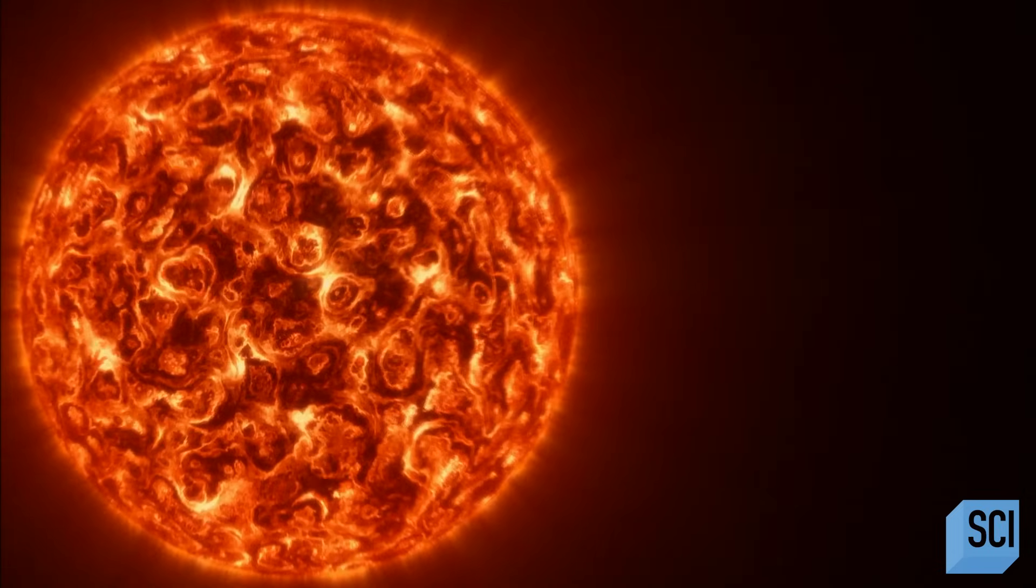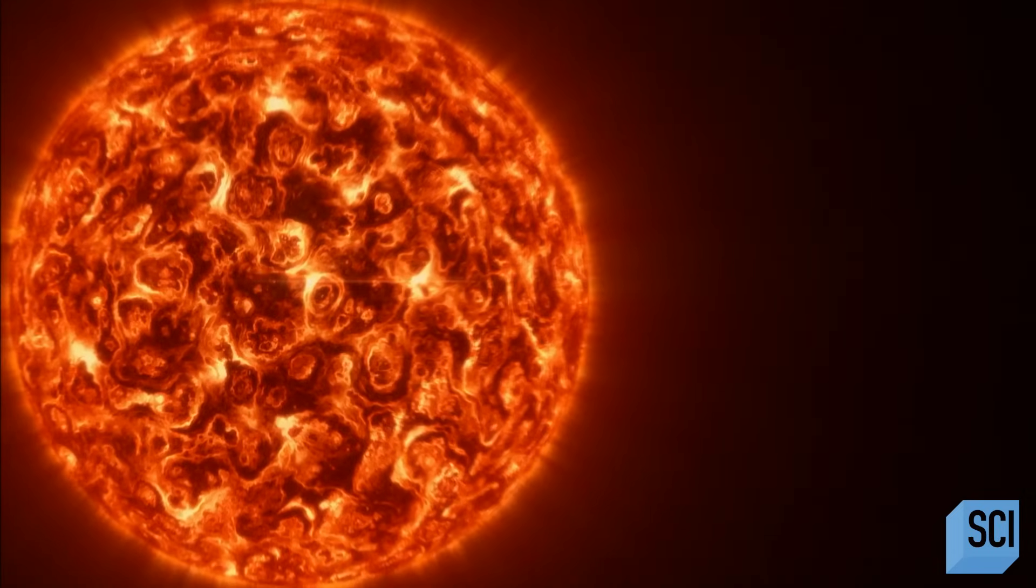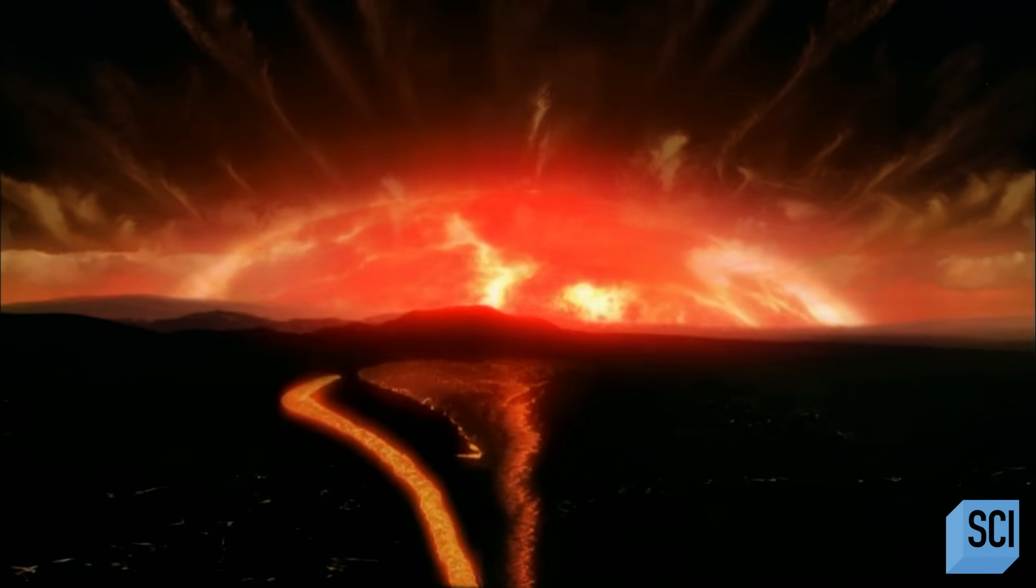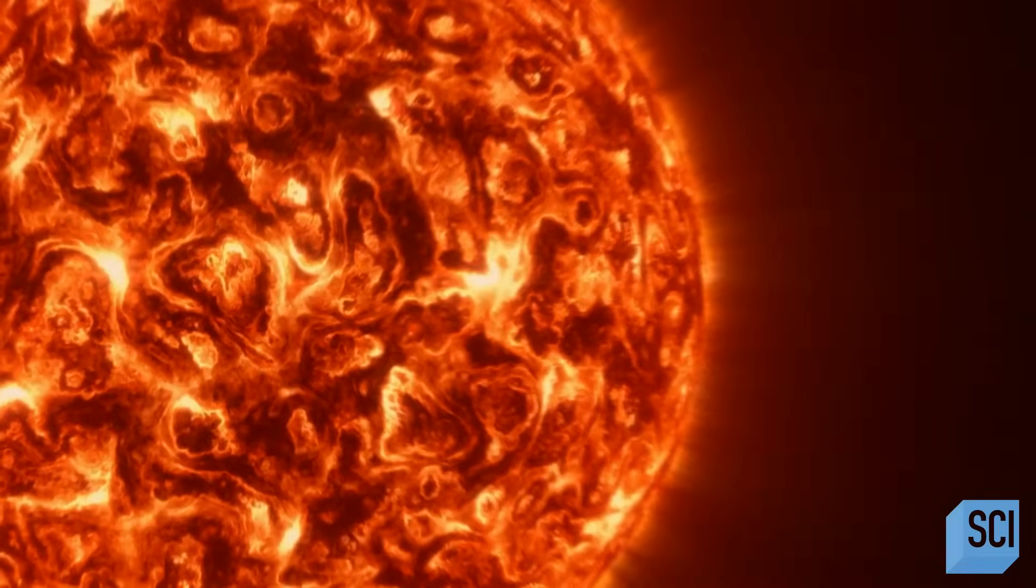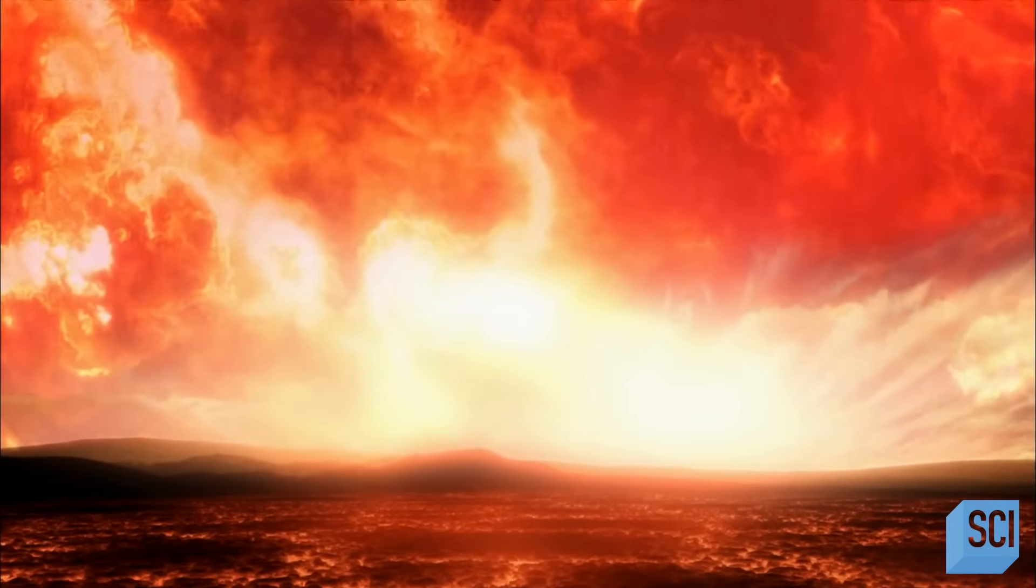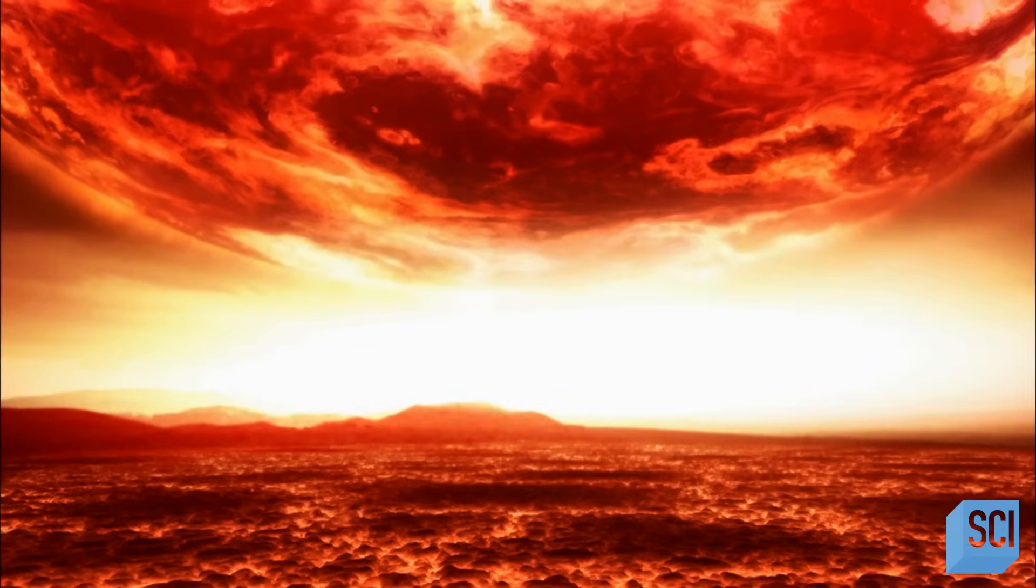If we were unlucky, our home planet could have a close encounter with an invading star. The odds are very low that another star will pass close by the sun. But those odds aren't zero. It could happen that another star passes close enough to affect the planets. And if that were to happen, it could upset the delicate balance in the solar system.